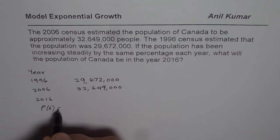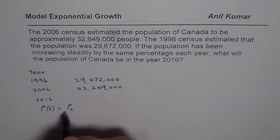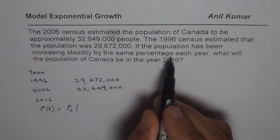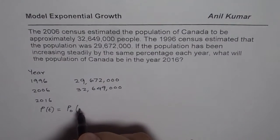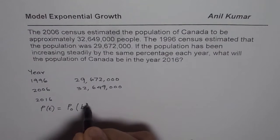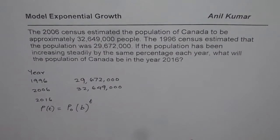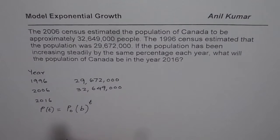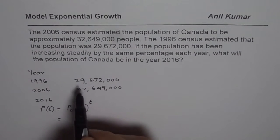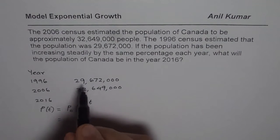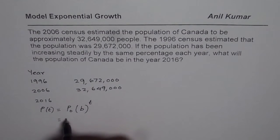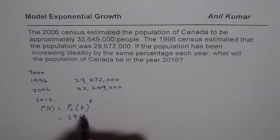where t is the number of years, can be written as initial population P₀ times b to the power of t. We don't know by what percent it is increasing, so we let it be b, which we will find. The initial population P₀ is 29,672,000.